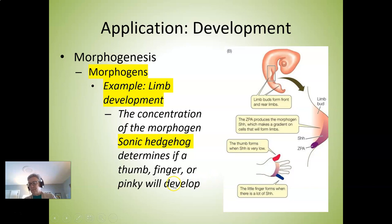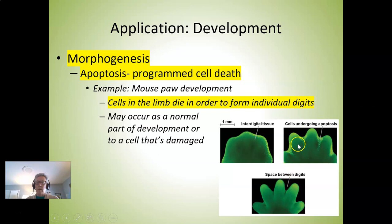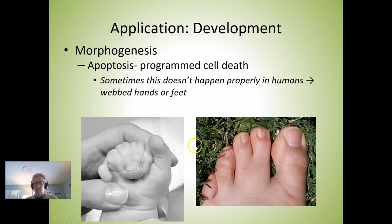Apoptosis is programmed cell death. Normally, a mouse paw starts out like a paddle, and then the cells in between what will become the fingers die off. Apoptosis plays a crucial role in development of different body parts, including our fingers. Organelles get degraded, cell parts get packaged up into vesicles, and they get cleaned up. When apoptosis doesn't occur correctly, you can end up with webbed fingers and toes because the cells in between the toes aren't properly dying off.